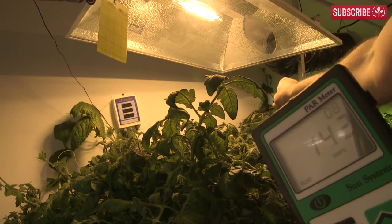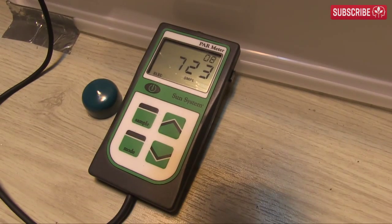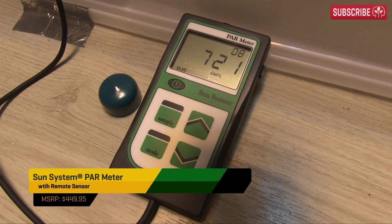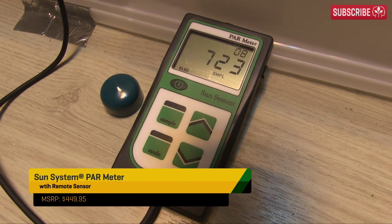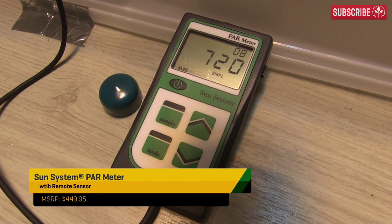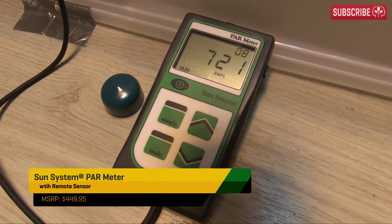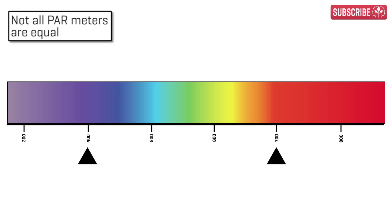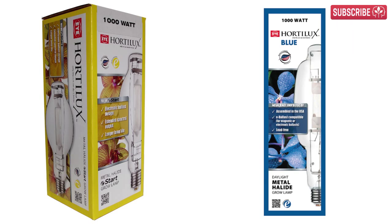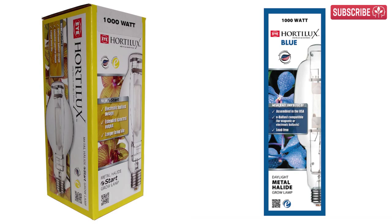Time to throw a curveball at you: not all PAR meters are equal. Some, like this Sun System PAR meter, measure everything between 400 and 700 nanometers. Other meters from grow lamp manufacturers count everything between 350 and 850 nanometers. So if you're comparing two different lamps' quoted PAR output, be sure they're using the same range.